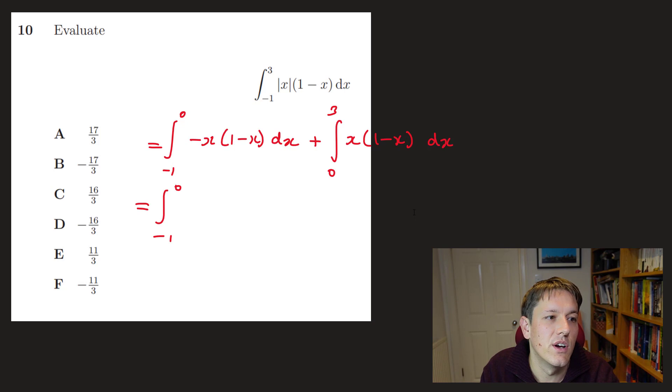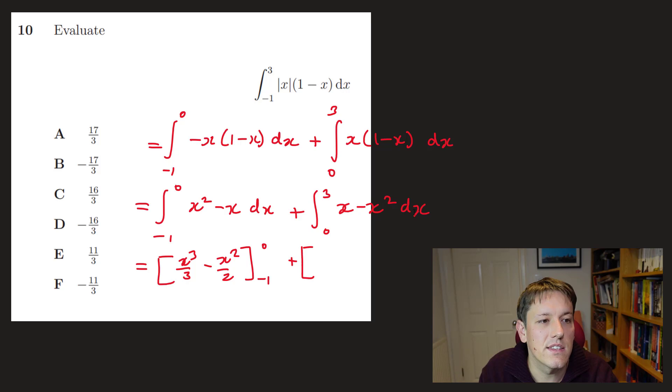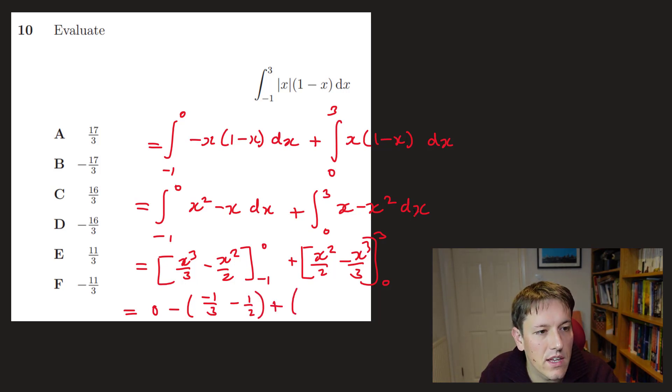So integral between minus 1 and 0 of x squared minus x dx plus the integral between 0 and 3 of x minus x squared dx. So I get x cubed over 3 minus x squared over 2 between minus 1 and 0. And x squared over 2 minus x cubed over 3 between 0 and 3. So we'll just plug the numbers in here. So I get 0 when I plug in 0. And then minus 1 third minus 1 half. And then here I get 9 over 2 minus 27 over 3.